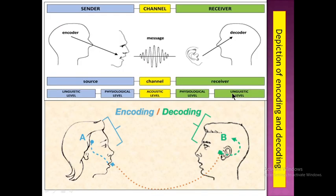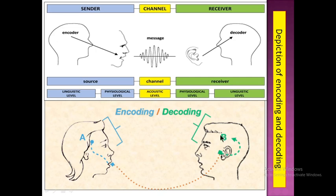These two are shown in pictorial form. The encoder is responsible to get a message out from the mind with the help of the mouth. That message is received by the ear of the listener, then transmitted to the mind of the listener, and it gets decoded. When A produces an idea with the mouth, it reaches the ear of the listener, then is transmitted to the mind, and that gets decoded. These two pictures are the depiction of encoding and decoding in pictorial form.